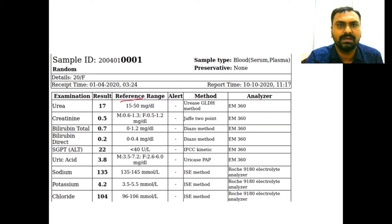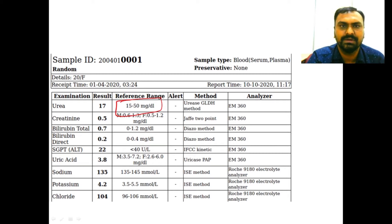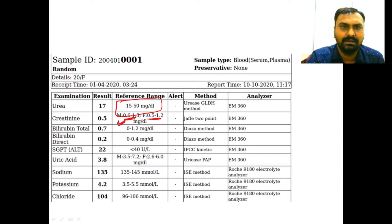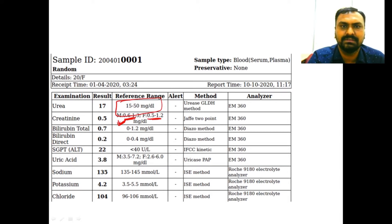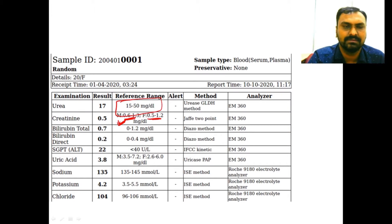The normal level of urea is around 15 to 50 milligrams per deciliter. For creatinine, in males it is 0.6 to 1.3, and in females it is 0.5 to 1.2. In males, the upper reference for creatinine is higher because of greater muscle mass.